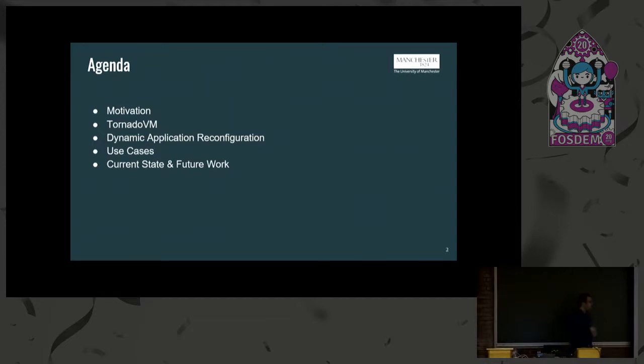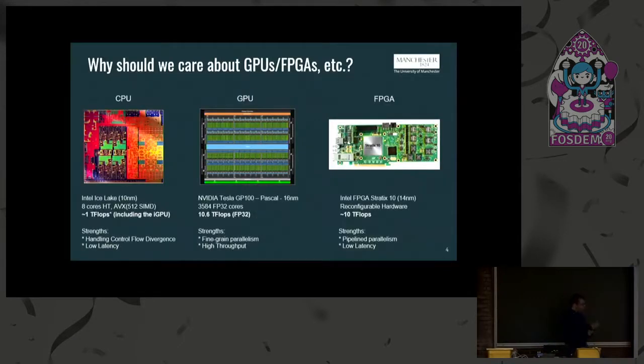So let's start with motivation. Why should we care about CPUs, GPUs, and FPGAs? The answer to this question is because they are available. From small systems like our smartphones we have our multi-cores with GPUs, so why not utilize them? Why not exploit all the available hardware that we have in the systems? In data centers we have seen FPGAs recently being deployed in the cloud, starting to be available in AWS instances.